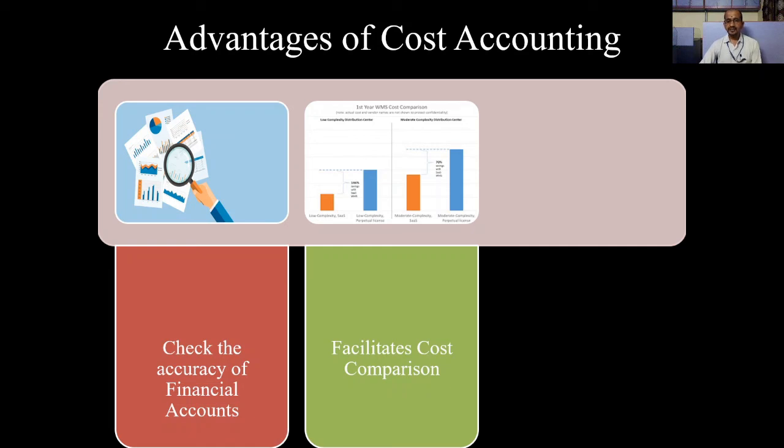Next, it facilitates cost comparison. Yes, you can compare the cost of different products. For example, you might know the soap Dove and you might know the soap Lux. Both are owned by Hindustan Unilever Limited. But the margin might be different between these two products; the cost may be different.